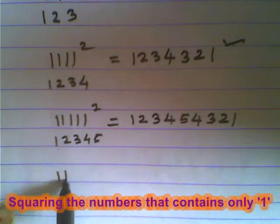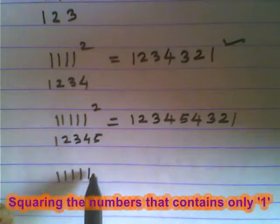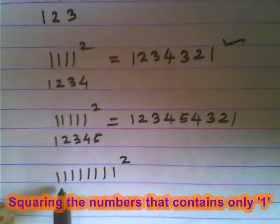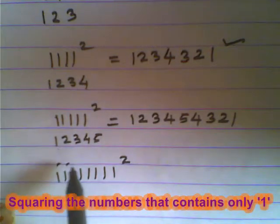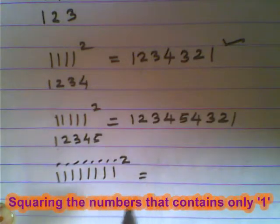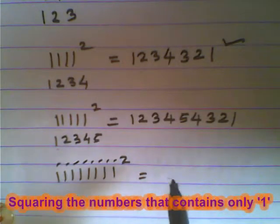Take the square of 11111111. Now, how many digits are there? 1, 2, 3, 4, 5, 6, 7, 8.